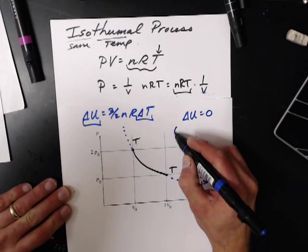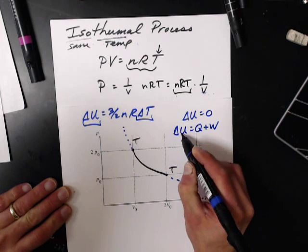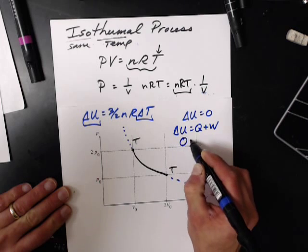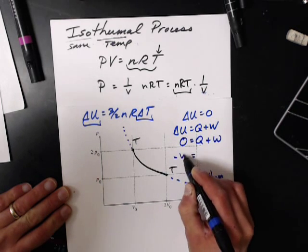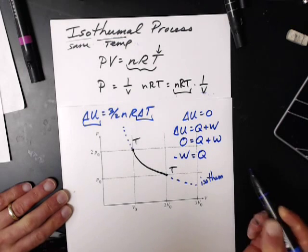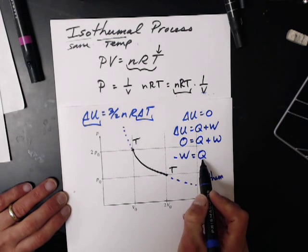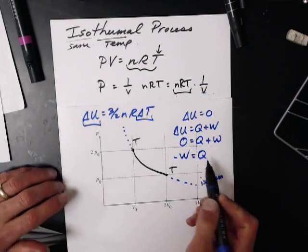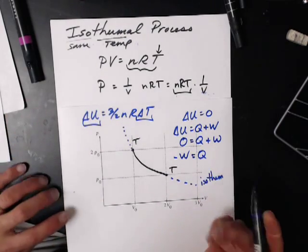The change in internal energy is also Q plus W. If delta U is zero, then zero equals Q plus W, which means negative work is equal to Q. So any amount of heat that comes in has to come out as work, or any amount of work has to come out as heat. The change in energy has to be the same.